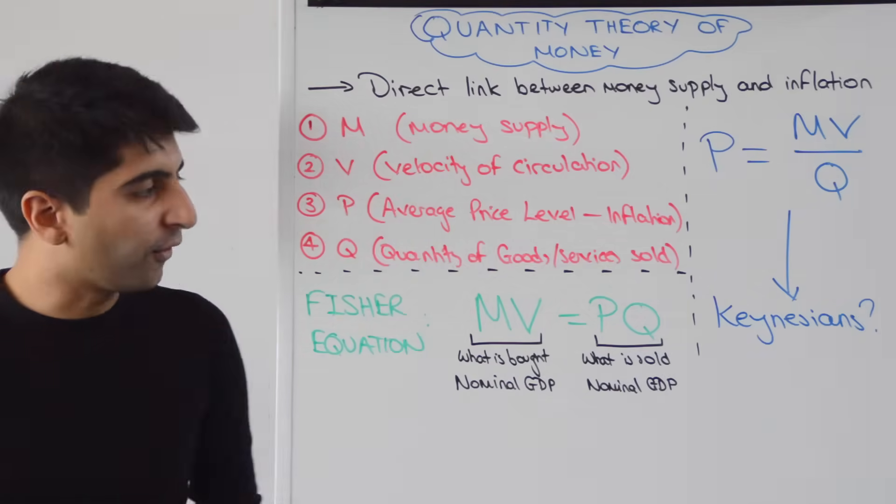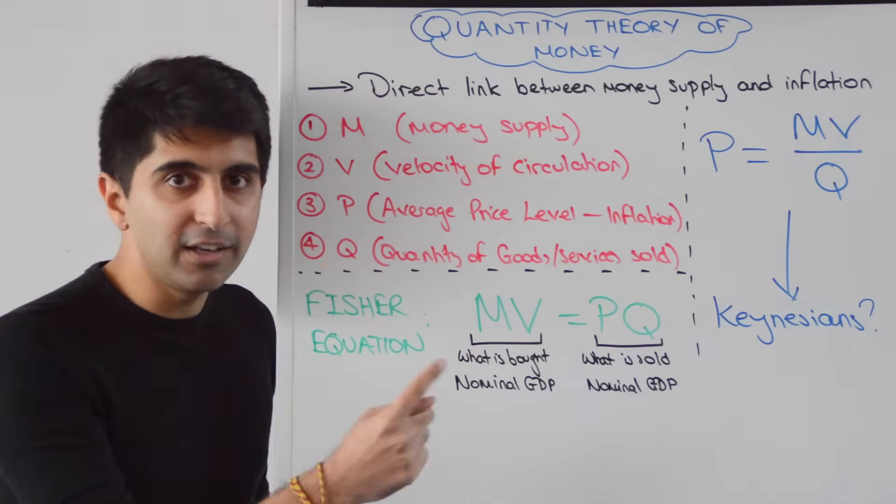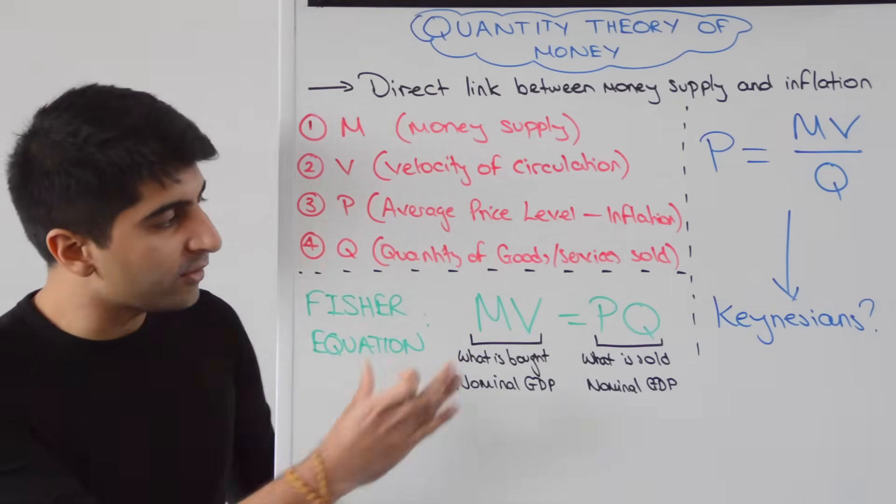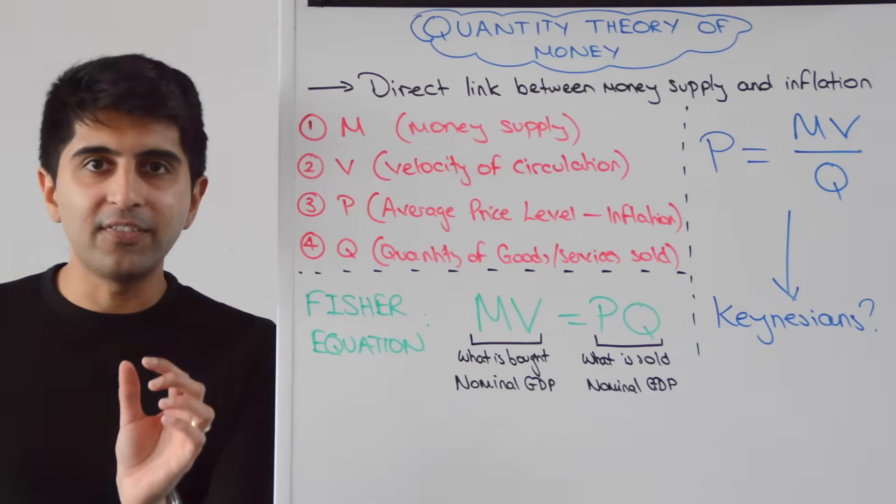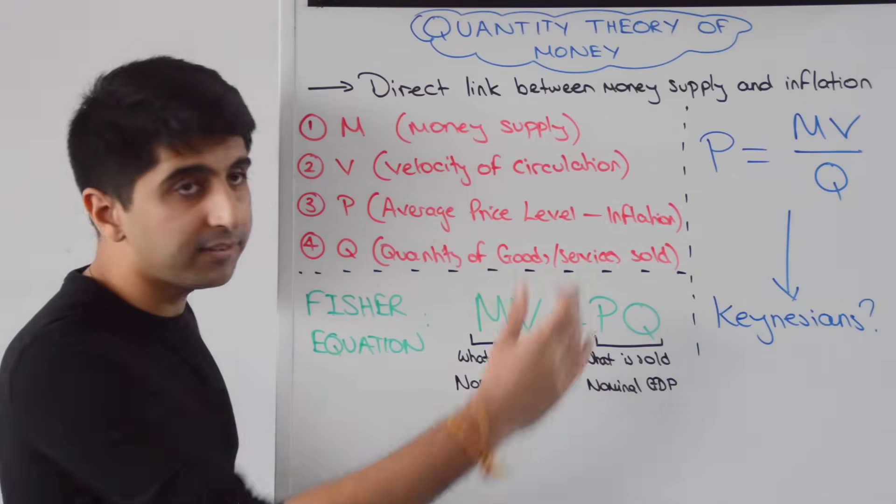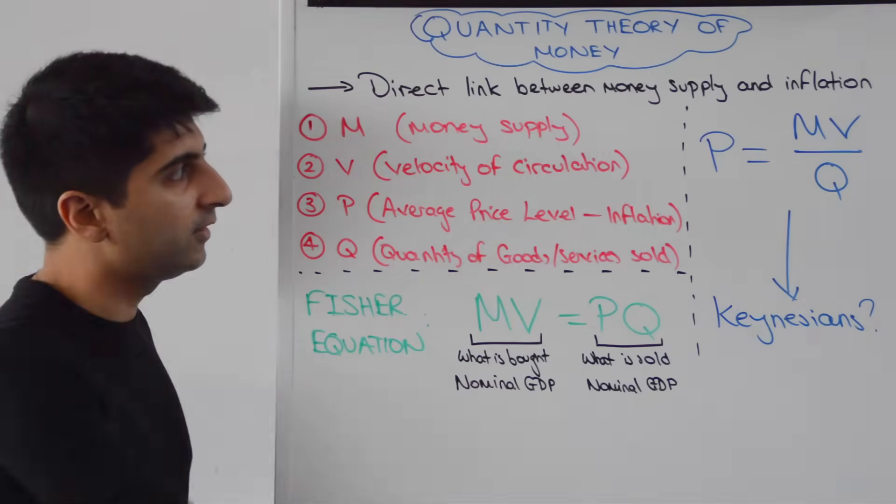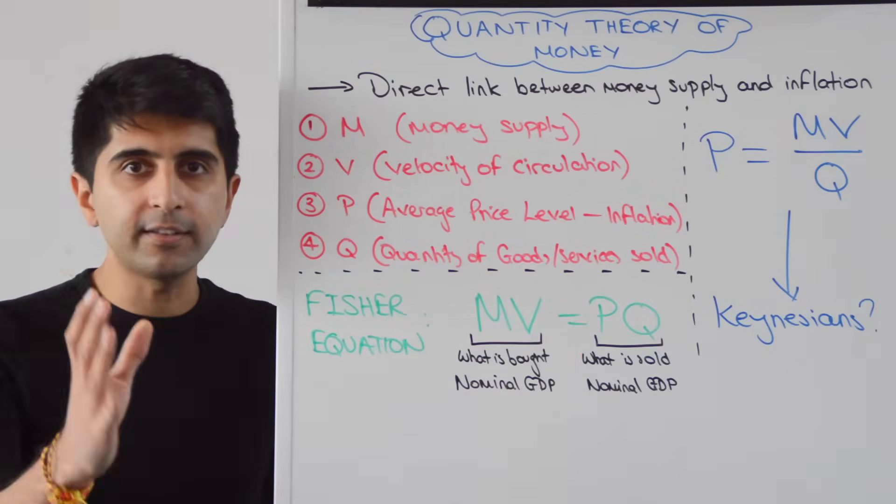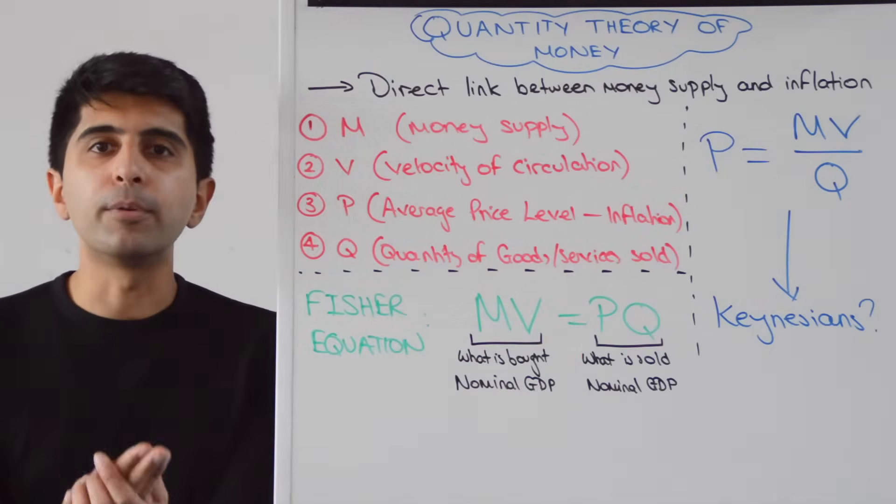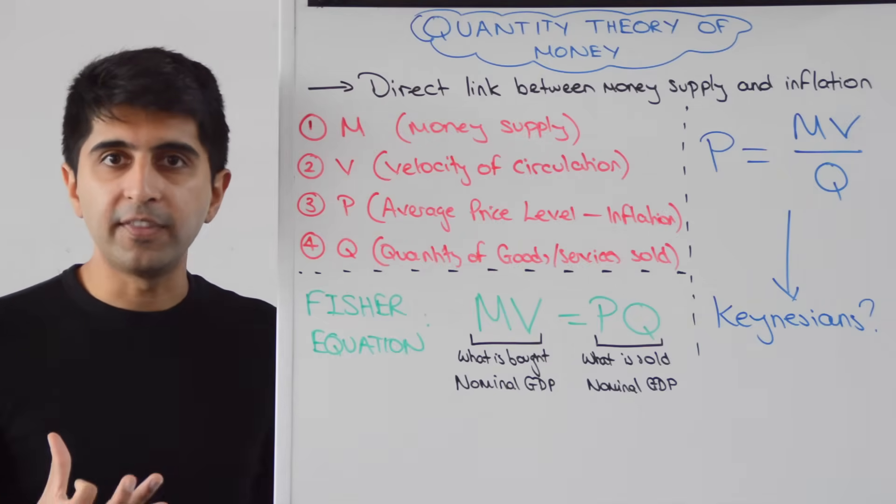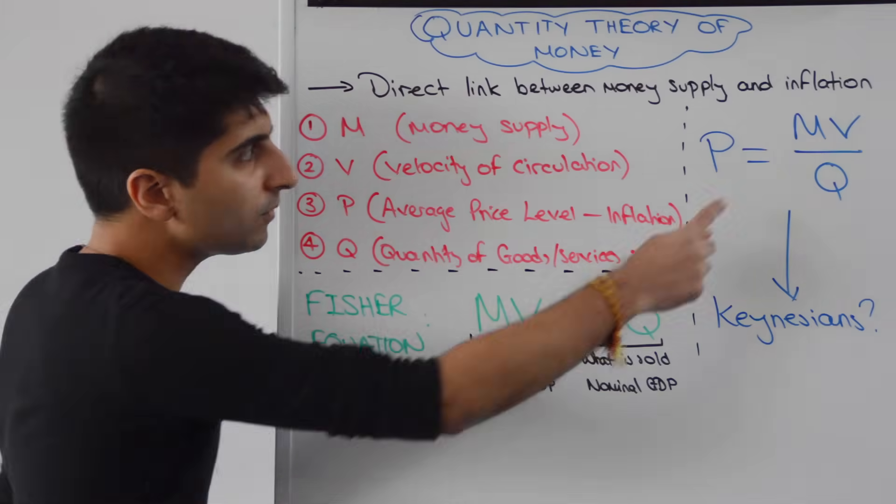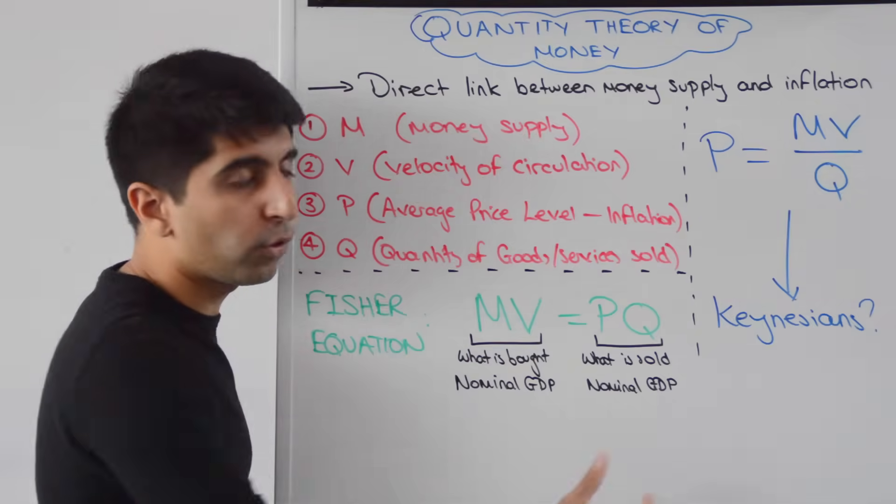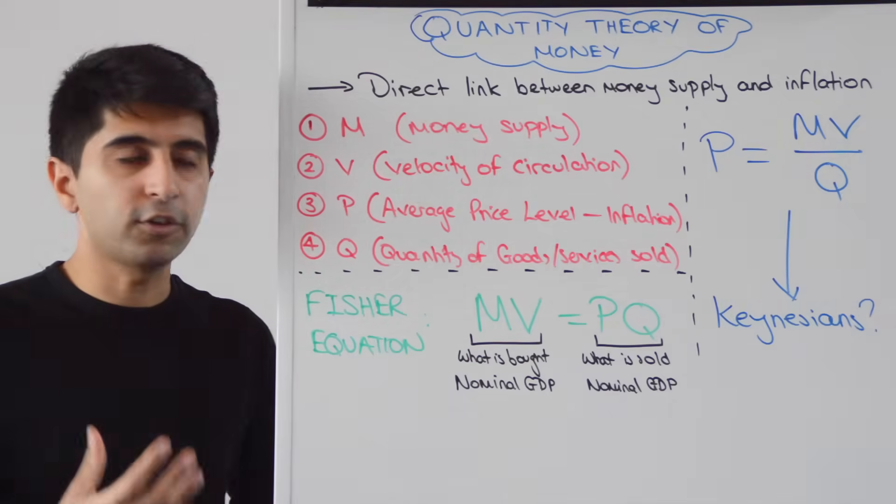But that is the premise of the link between the money supply and inflation. Let's understand why by going to this equation here. So if we want to use the Fisher equation to isolate the impact on prices, let's change the equation to isolate prices. So I've just rearranged the equation to get this. P equals MV divided by Q, and that tells you that there are three variables that could influence average prices in the economy, i.e. inflation. You've got the money supply, you've got the velocity of circulation, and you've got the quantity of final goods and services sold, i.e. real GDP.